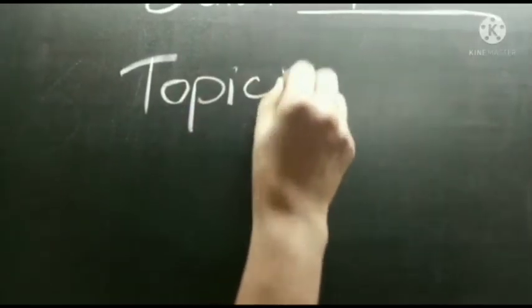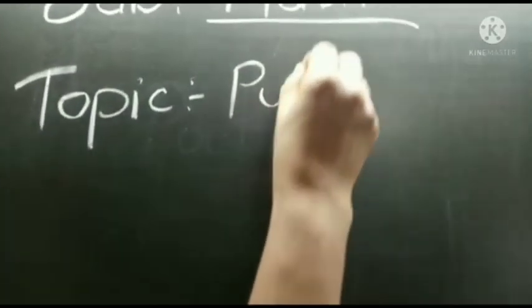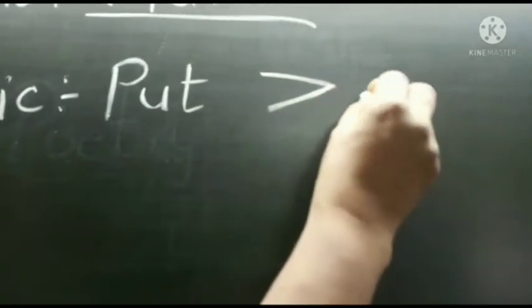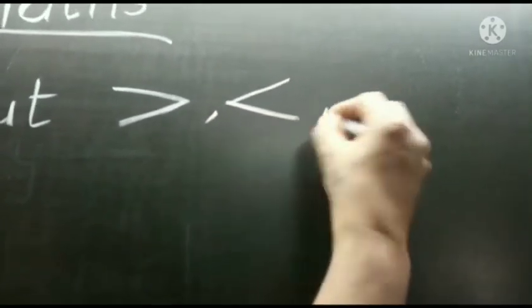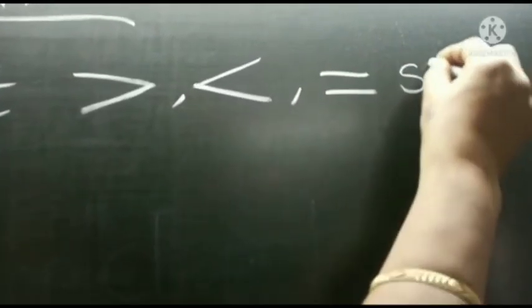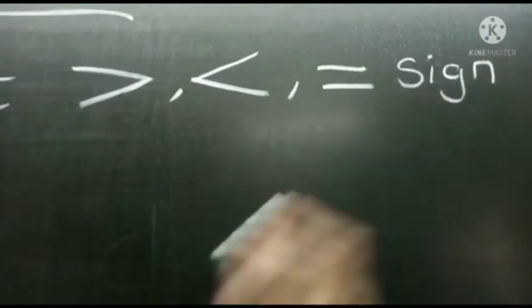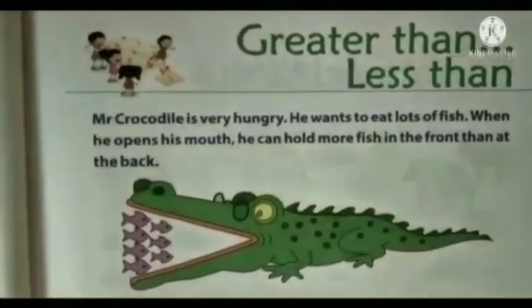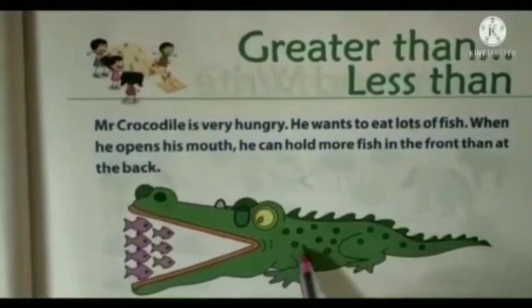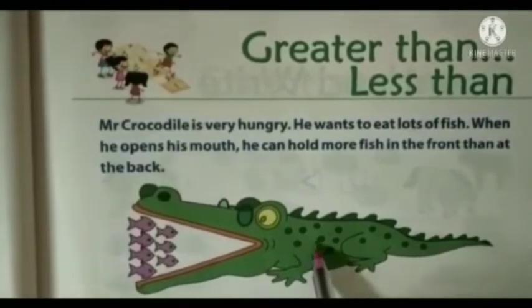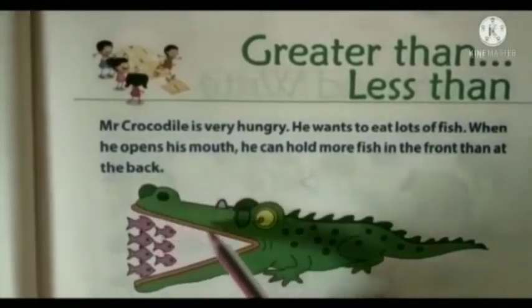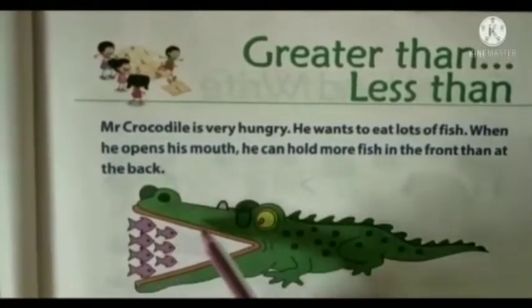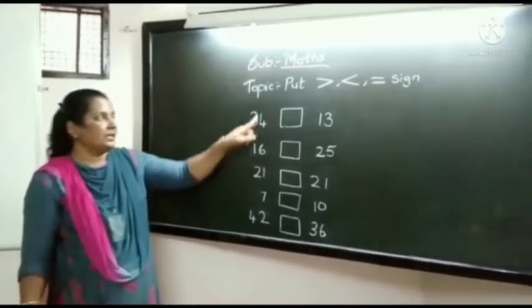Now I am going to teach you the new topic — greater than, less than, or equal to signs. Now children, look here. This is a crocodile, and he is very hungry. He wants to eat lots of fish. So where there are more fish, the crocodile opens his mouth like this. This is the greater than sign. Now we will learn this topic.